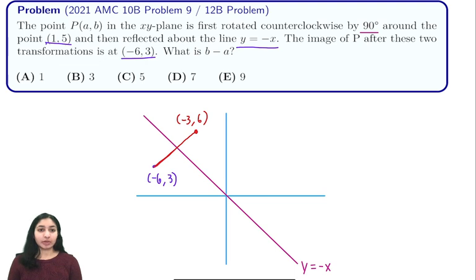Now what we want to do is work backwards from our rotation. We were told that a point was rotated about the point (1,5) to get to (-3,6). All we have to do is now rotate 90 degrees but clockwise, and that will be our point (a,b).